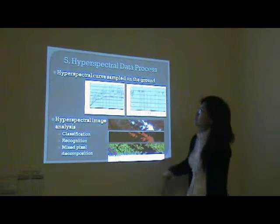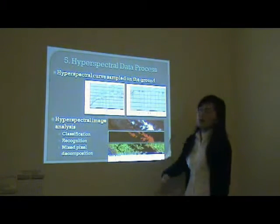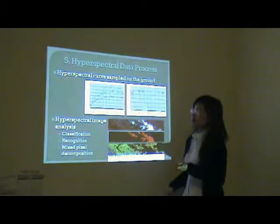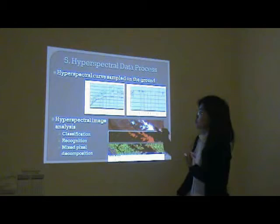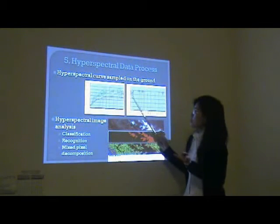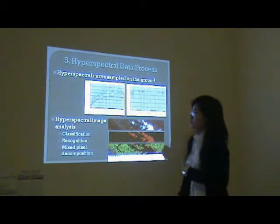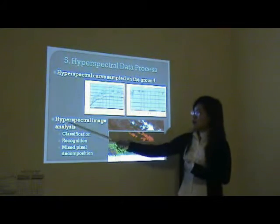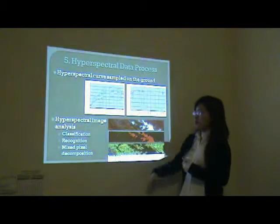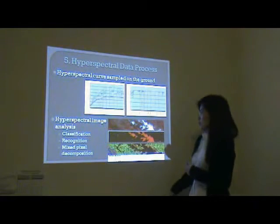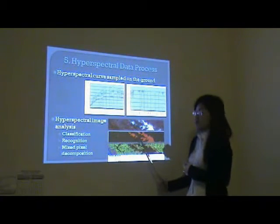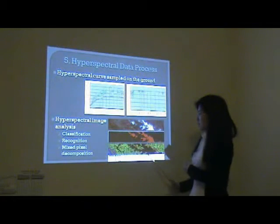The fifth part is hyperspectral data processing. First, I process hyperspectral curve measurements on the ground, including pre-processing and feature extraction. For example, we can extract associative features after continuum removal. Second, I analyze hyperspectral images, including classification, segmentation, and mixture decomposition. For example, recognizing rock types in Hyperion and classifying vegetation by their red-edge features.